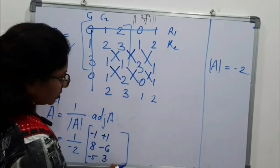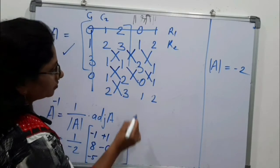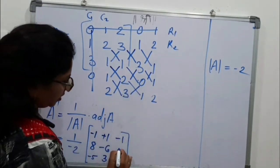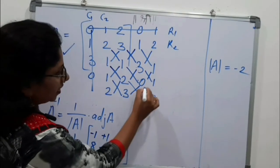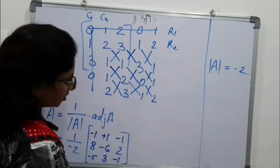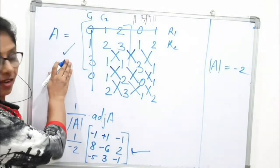Now for last column, 3 minus 4, minus 1. 2 minus 0 is plus 2. And 0 minus 1, that is minus 1. Now this is the inverse of given matrix A. Simple. How much time it takes? Few seconds only.